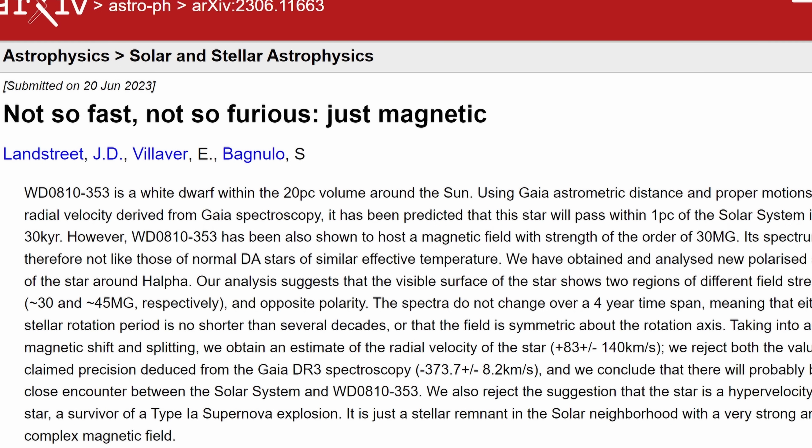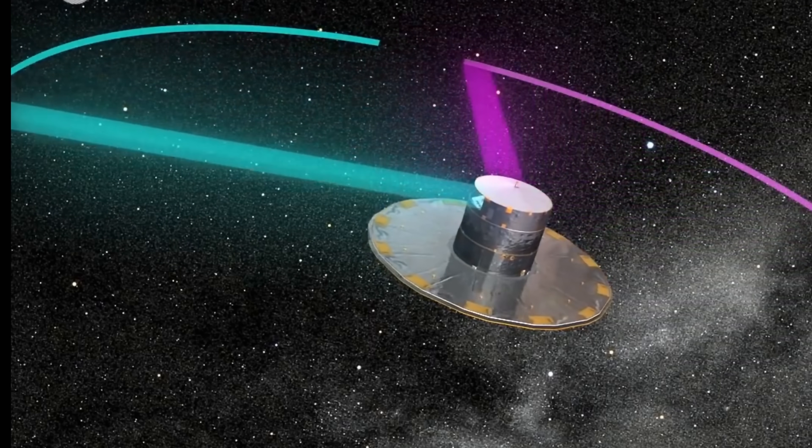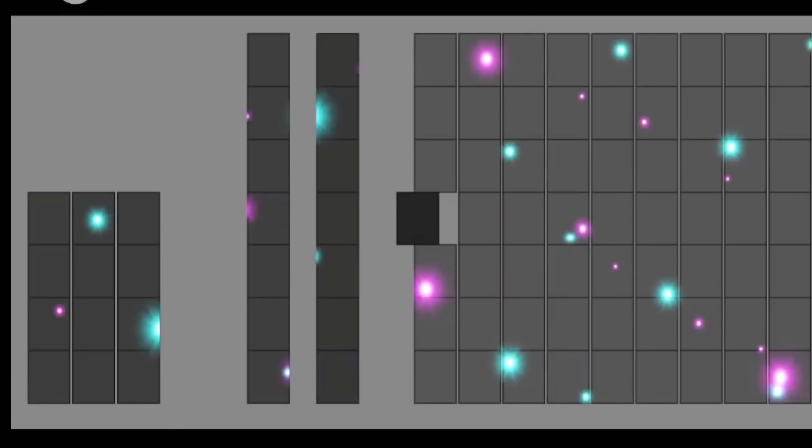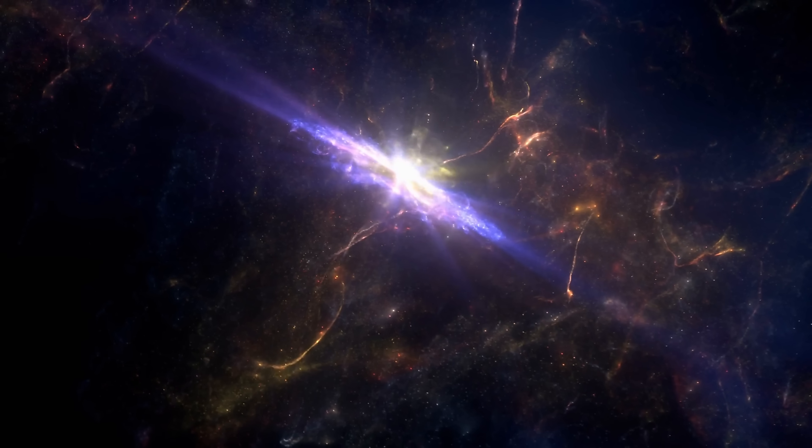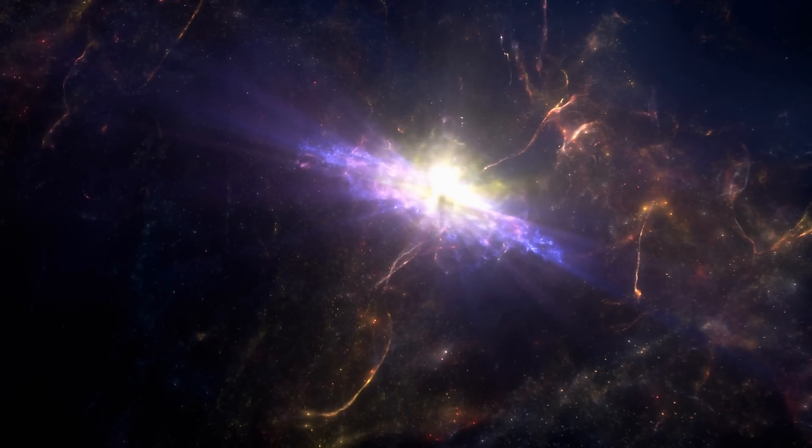Not so fast, not so furious. Just magnetic. In essence, it suggests that all of this light was very likely blue-shifted toward us by extremely powerful magnetic fields around this particular white dwarf.